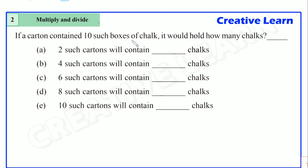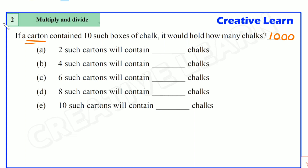Next question: if a carton contains ten such boxes of chalk, it would hold how many chalks? Ten boxes — how many chalks does it contain? One box means one hundred, so ten boxes means one thousand chalks. So one carton contains one thousand chalks — ten boxes means one thousand chalks.